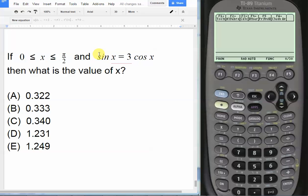In this video we're going to learn how to use the intersection function to solve equations. We have a trig equation where the domain is x must be between 0 and π/2, and sine x equals 3 cosine x. We want to know what the value of x is.